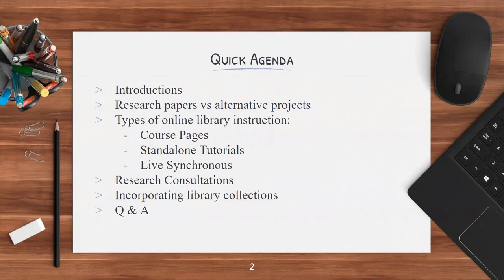We're going to discuss research papers versus some alternative projects you might consider for online classes. We'll look at types of online library instruction including course pages that we can create, standalone tutorials, or live synchronous research instruction. We'll also make a quick pitch for our research consultations and discuss incorporating library collections as you decide upon what assignment you want to make.